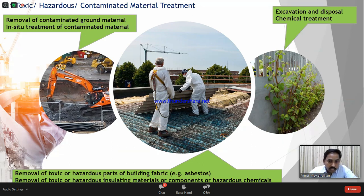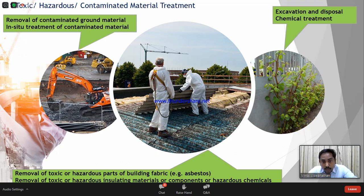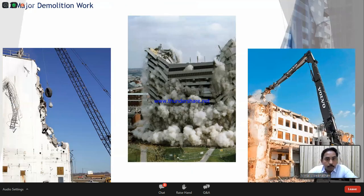As discussed earlier, asbestos removal is the removal of a toxic hazardous product from a building. These kinds of contaminated materials come under specialist subcontractors. Whenever you encounter this kind of work in your contract, you understand specialist subcontractors will be involved, and from the cost perspective, that particular cost will come into your overall cost — you have to take care of that while planning.